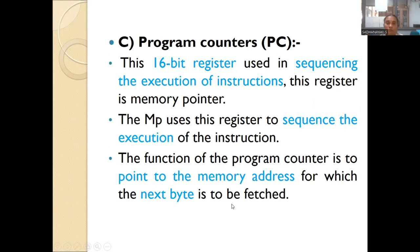Next comes the program counter, which is a 16-bit register. It is used for sequencing the execution of instructions. It is a register that points to the memory address of the next instruction to be executed. The microprocessor follows the address stored in the program counter to execute the next instruction. After completing the current instruction, the program counter points to the memory address from which the next byte is to be fetched.